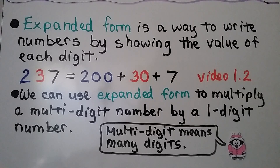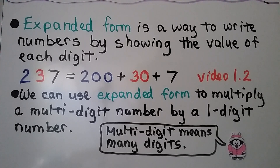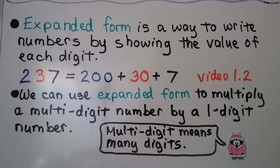Expanded form is a way to write numbers by showing the value of each digit. For example, 237 is equal to 200 plus 30 plus 7. We first learned about that back in video 1.2, which is linked in the description.